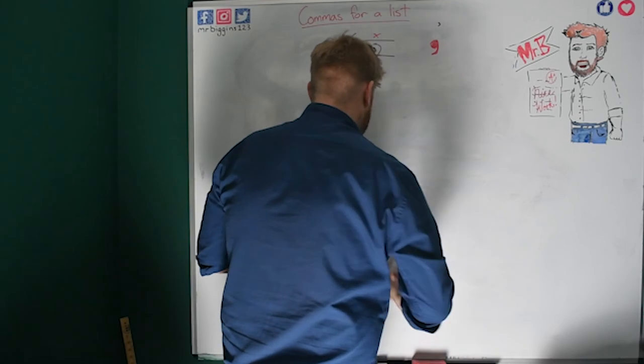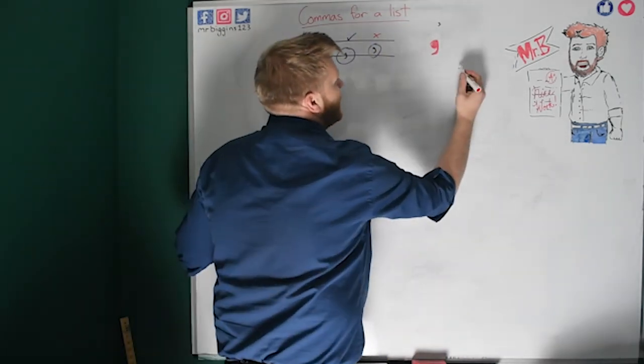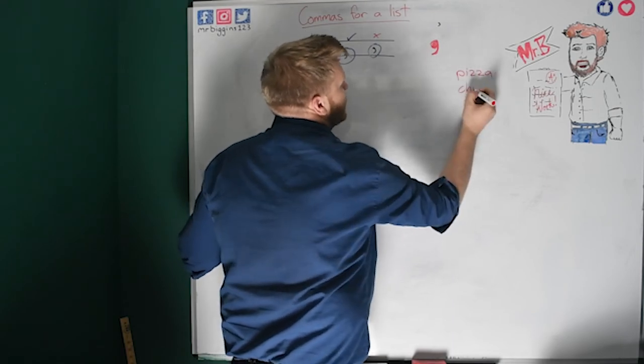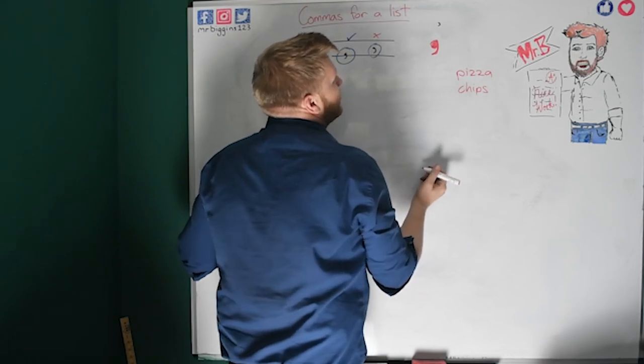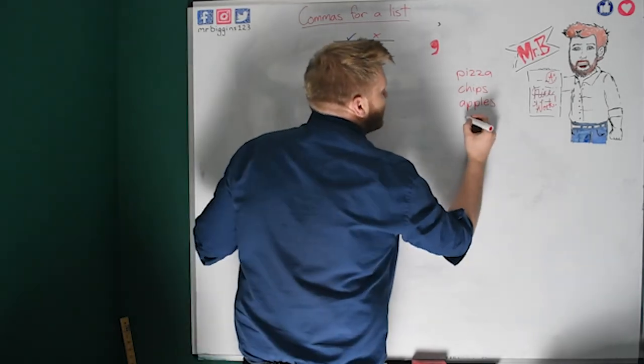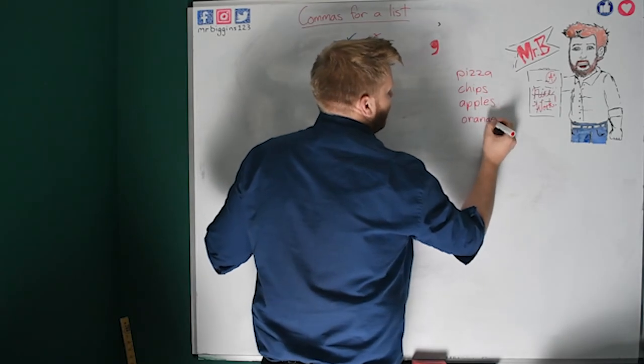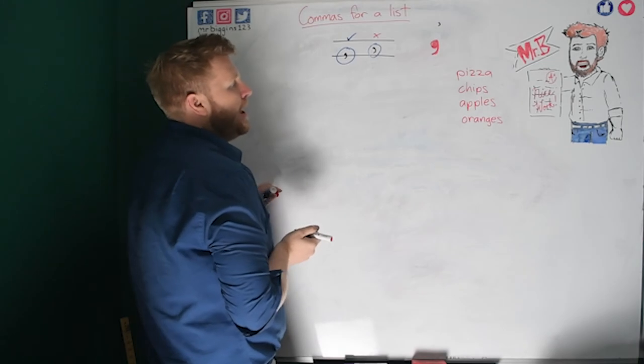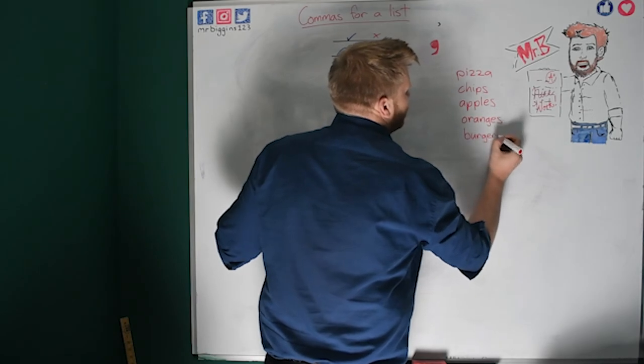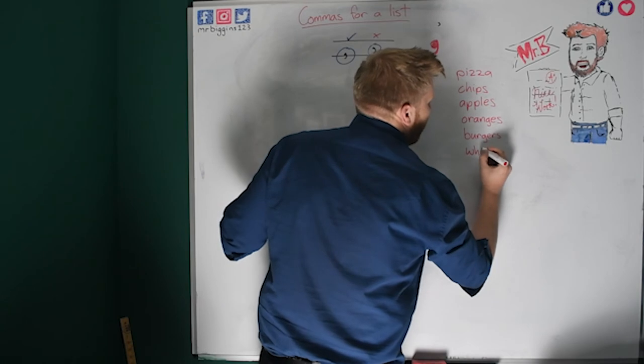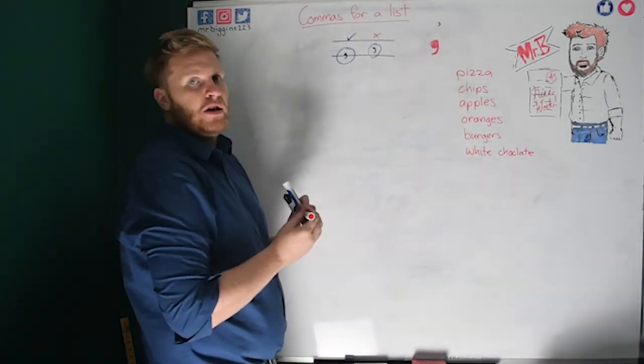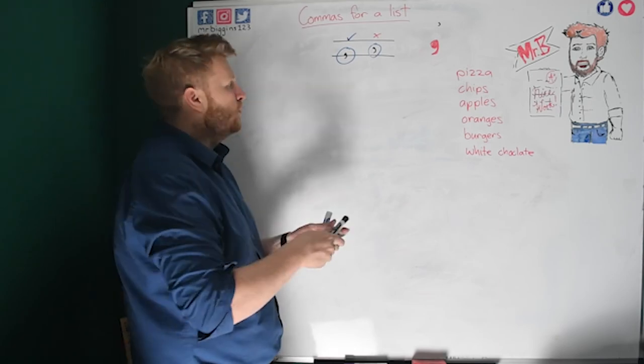So, I'm going to rub this off, and I'm going to write a list. Let's say it's a shopping list for Mr. B, the things he's going to have at the weekend. He likes some pizza. So, we'll have some pizza. We'll have some chips. We need to have something that's a bit more healthier. So, we'll have some apples, and maybe some oranges. And what else can we have? Burgers. Ooh, and I'm going to have some white chocolate, because I love white chocolate. Not a very healthy shopping list, but it's OK. I normally eat a lot healthier than that.